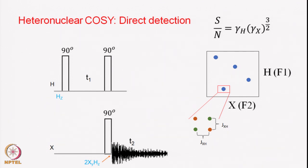Let us look at some of the standard correlation experiments — the heteronuclear COSY — to understand their principles. This is the simplest correlation experiment: the heteronuclear COSY by direct detection. This is very similar to the homonuclear COSY we studied earlier, except that we have two separate channels — the X channel and the proton channel — and we can apply pulses selectively to either channel. We apply a pulse to the proton, creating transverse magnetization of the protons. The proton magnetization then evolves during the T1 period, and then simultaneous 90-degree pulses on both the proton and X nucleus effect the transfer of magnetization from the proton to the X nucleus as the result of the mixing.